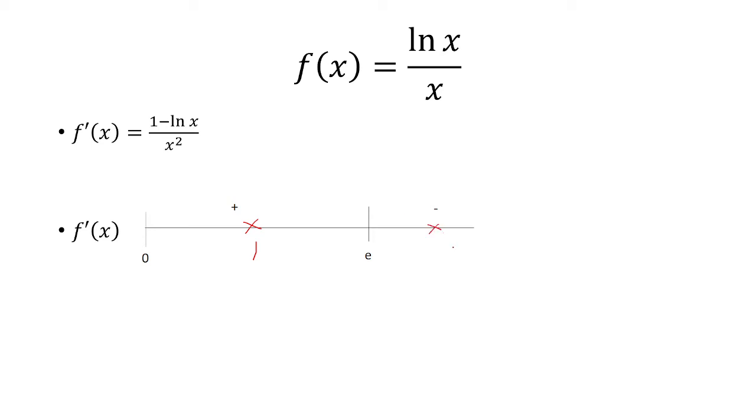And if you pick a value to the right of e, let's say e squared. 1 minus ln of e squared becomes 1 minus 2, which is negative 1. That's negative 1 over e to the fourth, so that's negative.